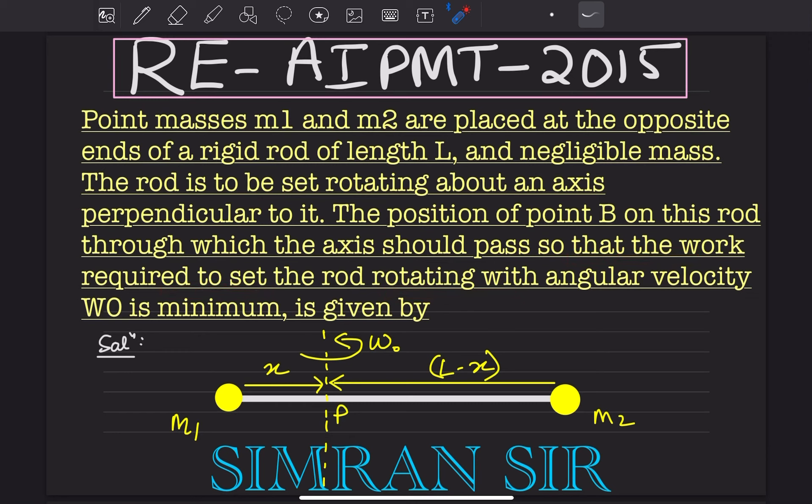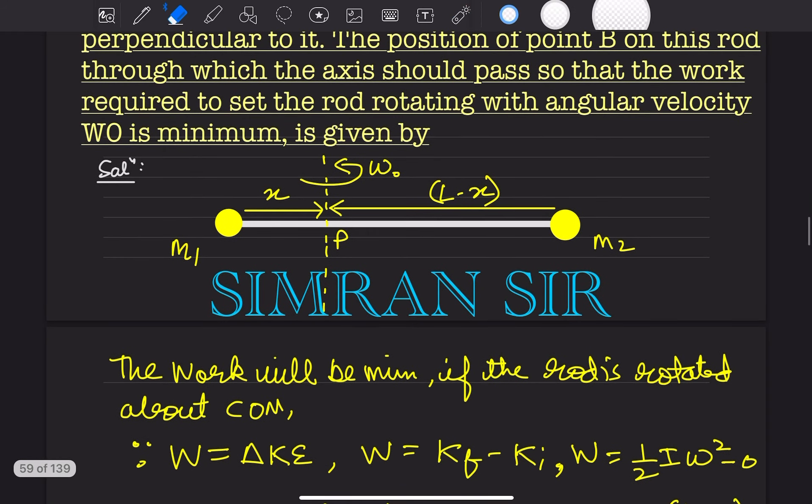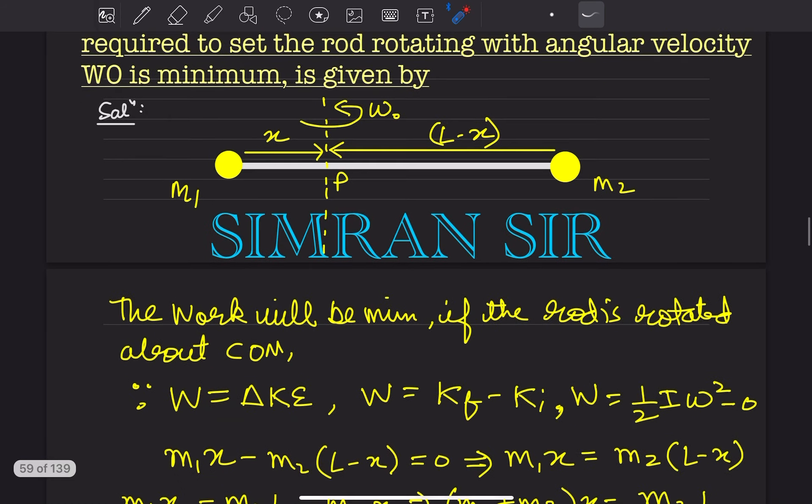The work energy theorem says that work done is equal to change in kinetic energy. Work done equals final kinetic energy minus initial kinetic energy. Initially the rod has zero velocity.